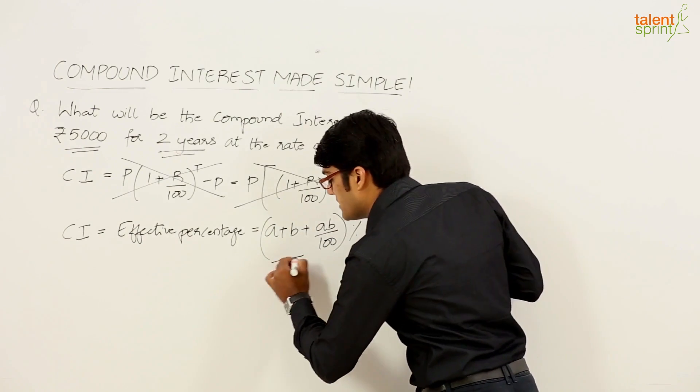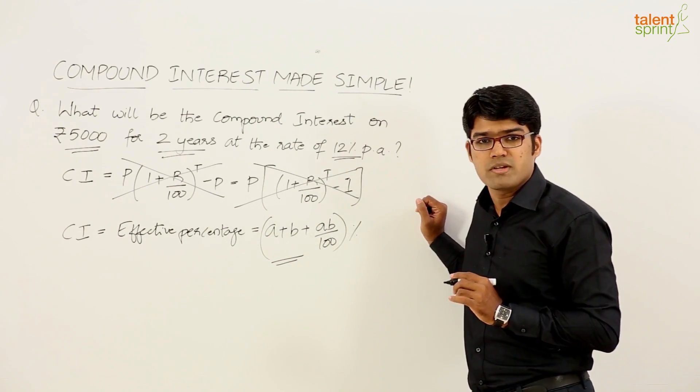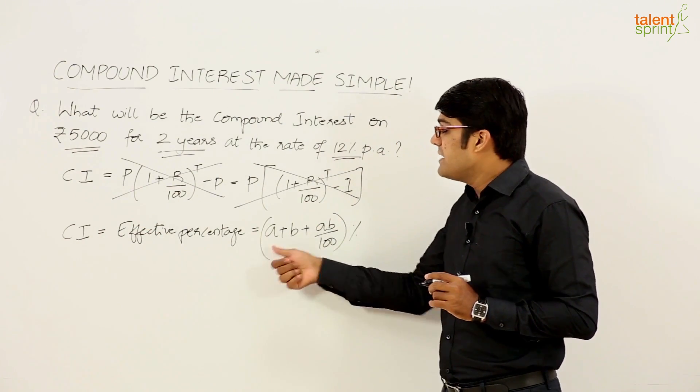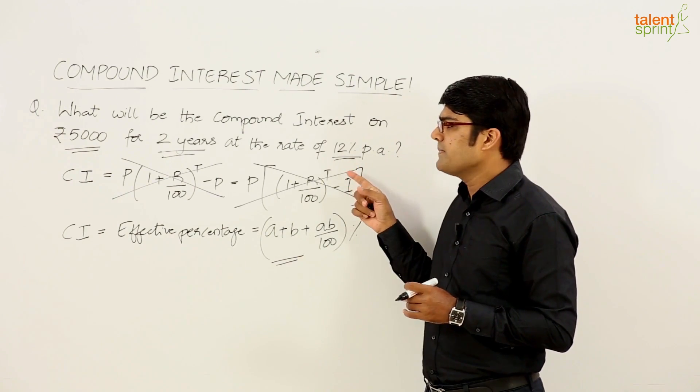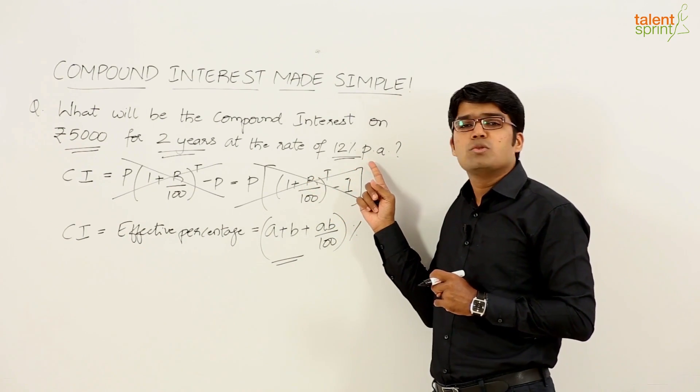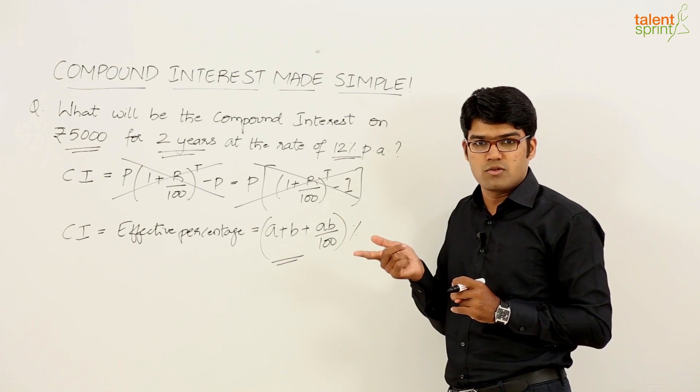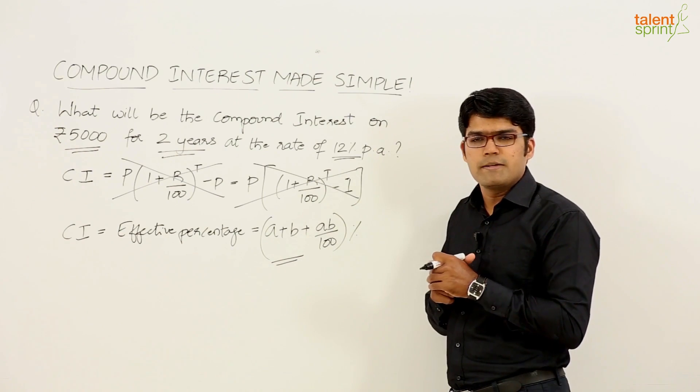Now this is a very important concept, the concept of effective percentage which can be used for solving various types of questions of which compound interest is one. What are A and B here? The rates of interest for the first and the second year. Now in the given question it says 5000 rupees for 2 years at 12 percent per annum which means each year the rate of interest is 12 percent. Rate of interest for the first year is 12 and for the second year as well it is 12.